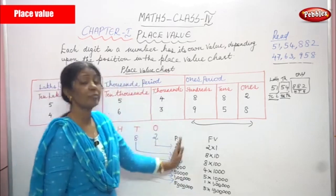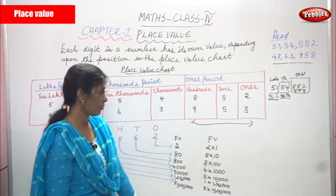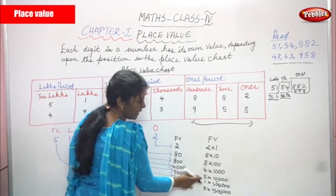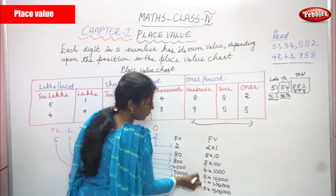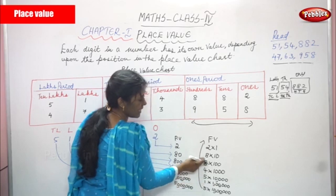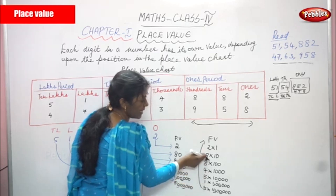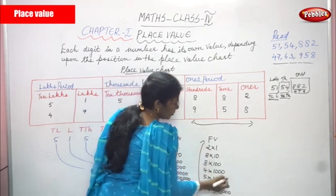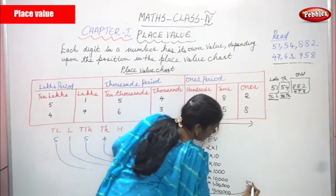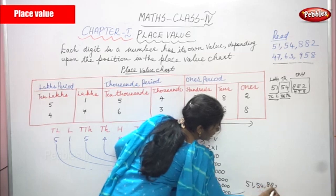This is the difference between place value and face value. When you add them all up, you will get the same answer: 51 lakhs 54 thousand eight hundred and eighty-two. That is the total.